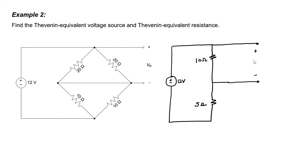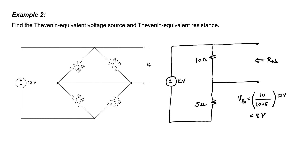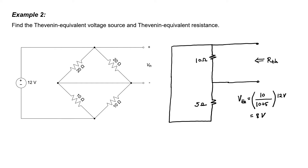To find the Thevenin equivalent voltage, I need to measure the voltage across the remaining 10 ohm resistor. It's just a voltage divider. The voltage is 10/15ths of the 12 volts, so our Thevenin equivalent voltage is 8 volts. To find the Thevenin equivalent resistance, I zero out the 12 volt source. Dialing a voltage source to 0 volts gives a short circuit, so I short the source.